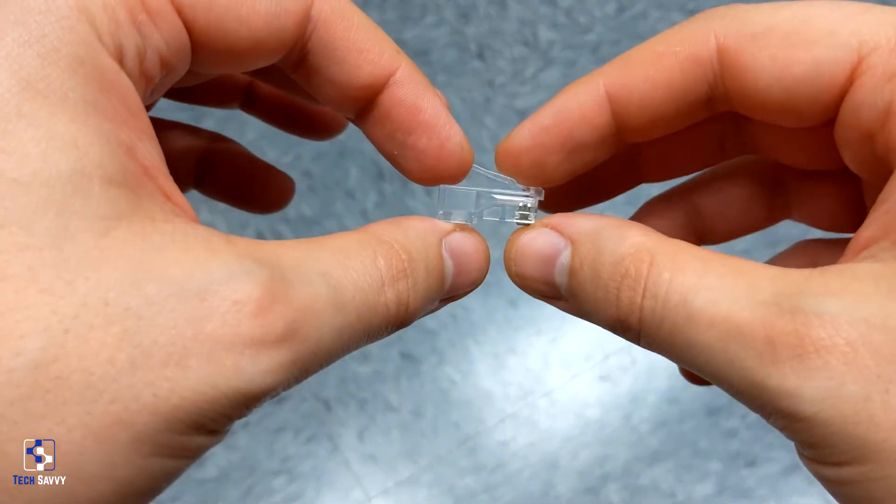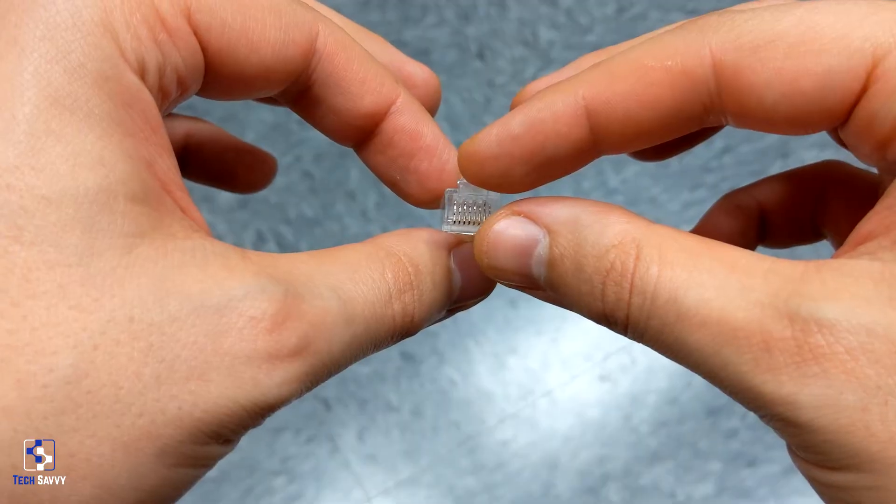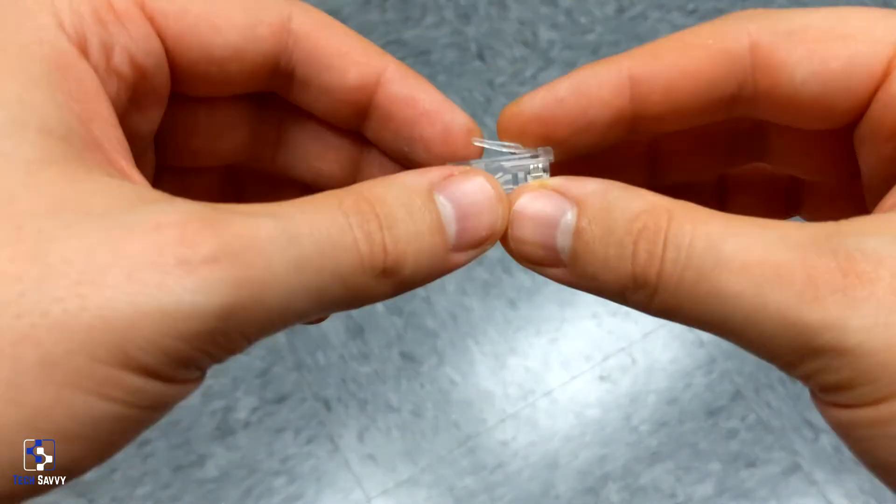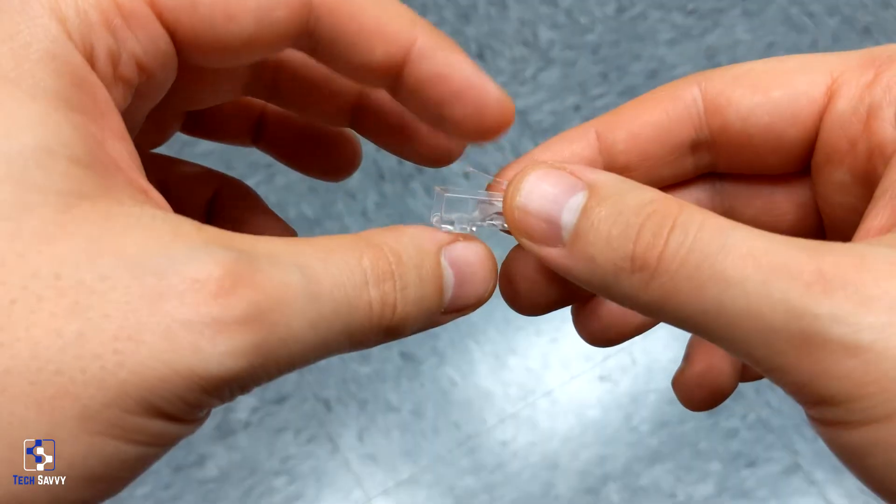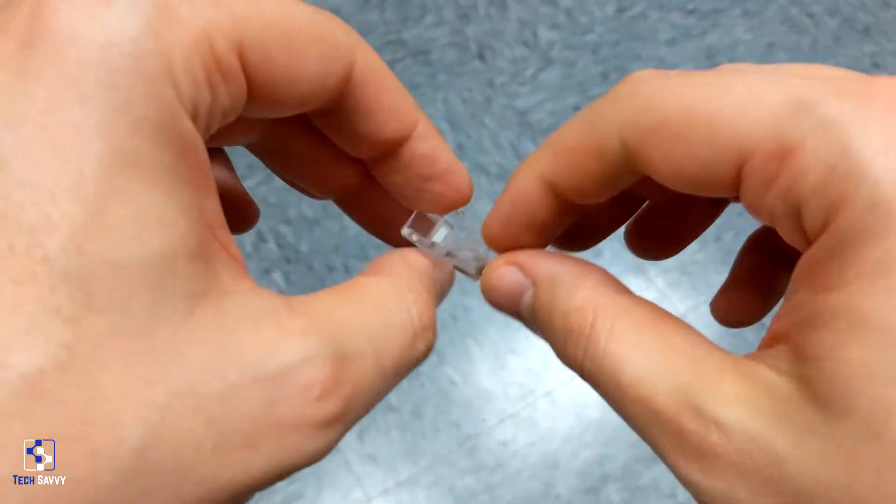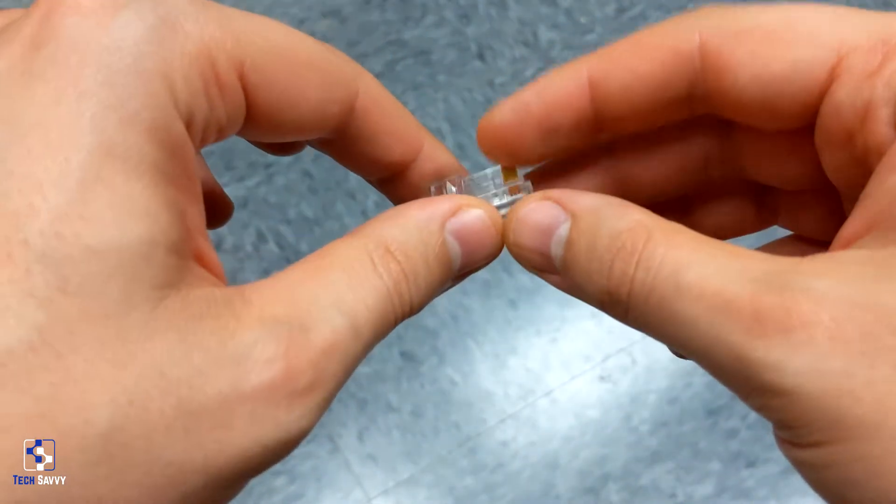You can grab yourself a jar of RJ45 connectors on Amazon. We're going to need two of these obviously, but it doesn't hurt to have some spares, especially when you're still learning how to crimp and the exact length of the wires we're going to be cutting.